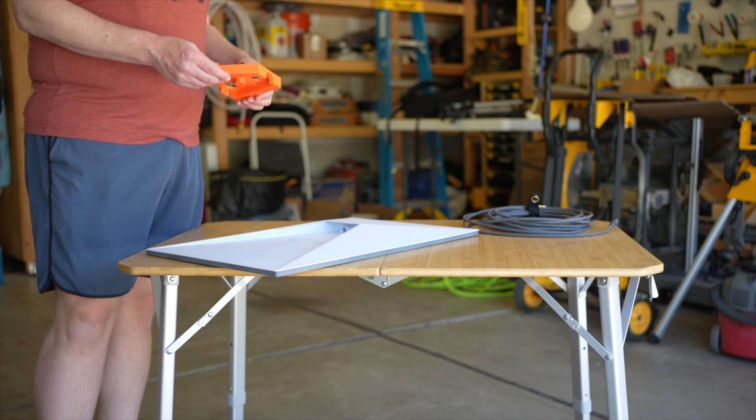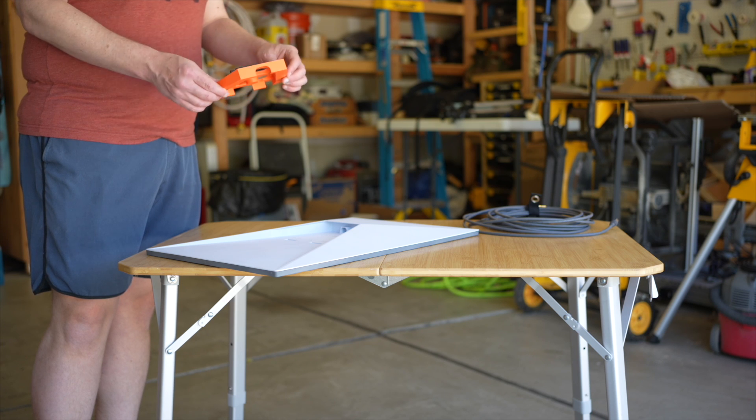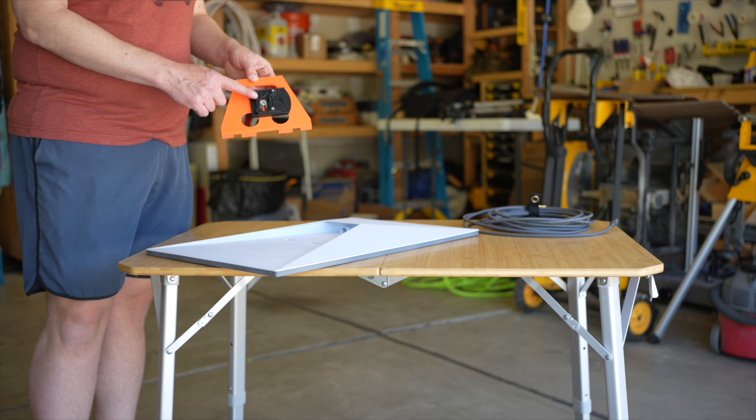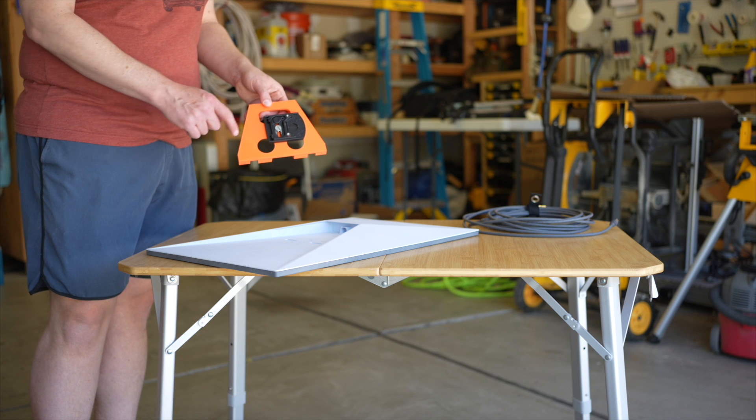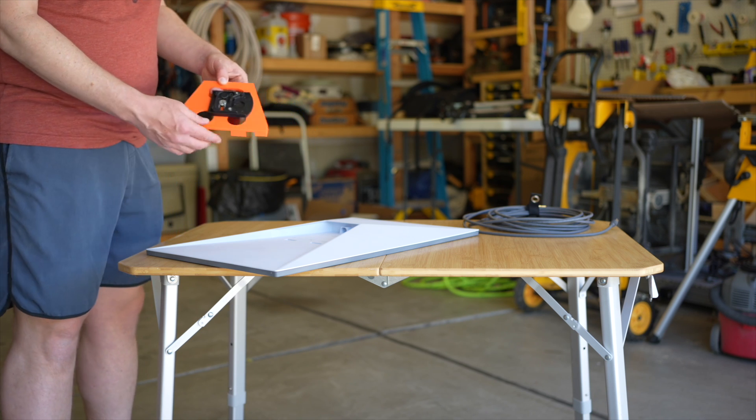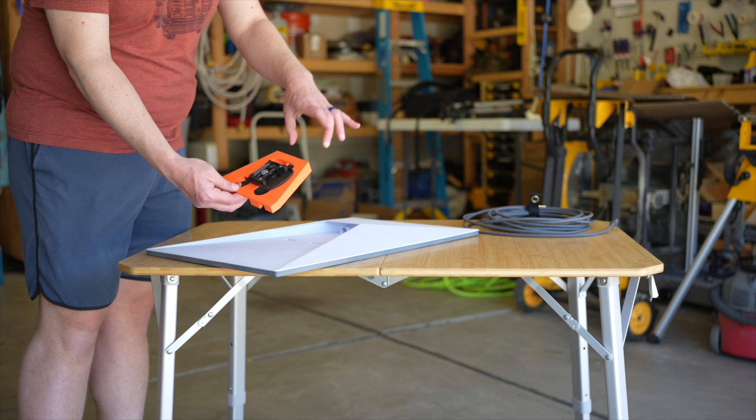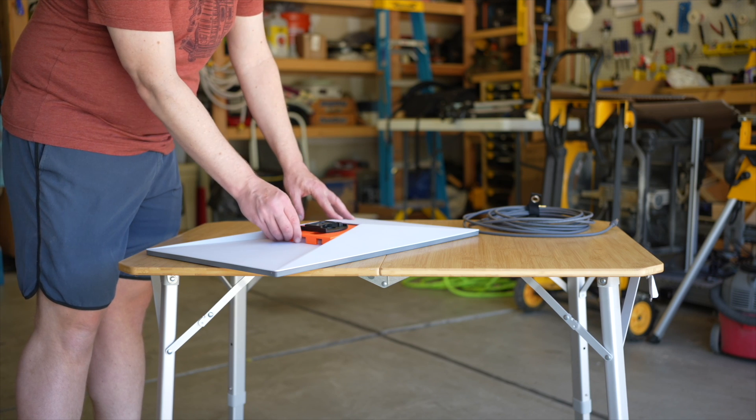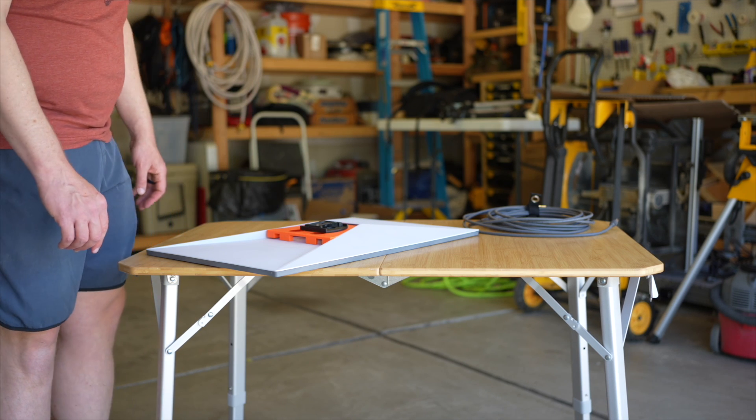So here's the Starlink tripod adapter, 3D printed part, and here I have a quick release plate that I use with my tripod which lets me easily take it on and off. To install it you're going to align it so that the shorter end is facing the shorter end of your Starlink after you've removed the kickstand.